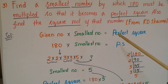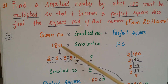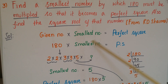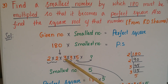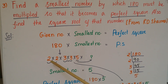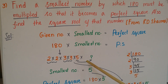Perfect square = given number × smallest number. Here the given number is 180. We can write 180 as 2 × 2 × 3 × 3 × 5 by prime factorization. Observing the pairs: 2 × 2 is one pair, 3 × 3 is another pair, but for 5 there is no pair. So the smallest number is 5.